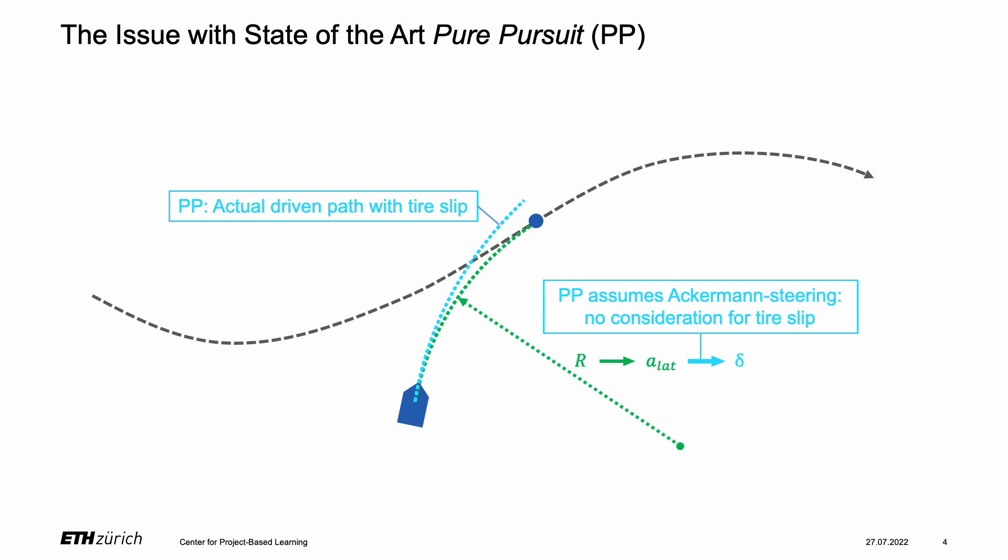The issue with the current state-of-the-art geometric controller Pure Pursuit is that it disregards tire slip, an assumption that fails at higher speeds and causes steady-state errors in trajectory tracking.